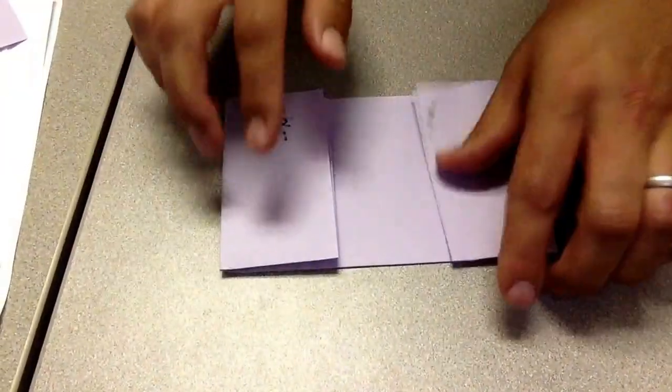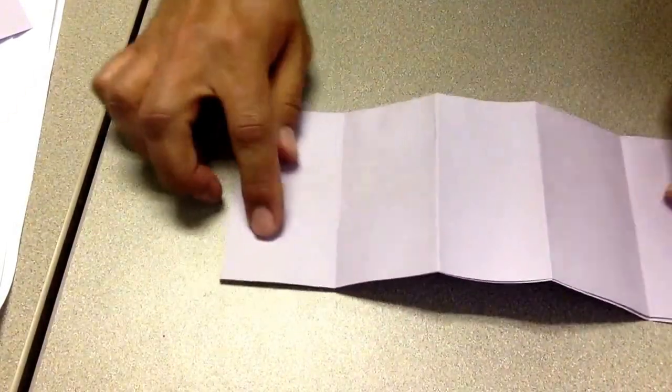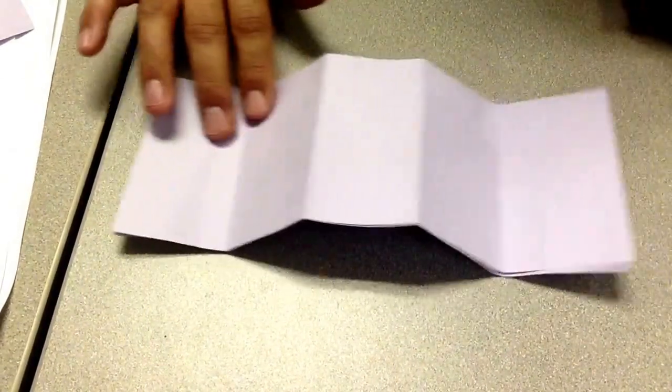I permanentize my creases, and then I put a crease where the folds meet. And that, in all of its imperfections, is how I now have a fraction strip of fifths. Thank you.